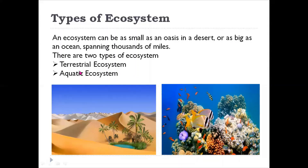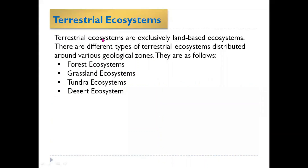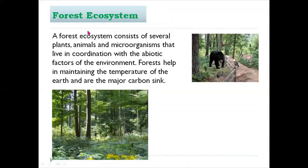There are two types of ecosystem: terrestrial and aquatic. Terrestrial ecosystems are exclusively land-based and are distributed around various geological zones. Within the terrestrial ecosystem we have the forest ecosystem, the grassland ecosystem, the tundra ecosystem, and the desert ecosystem.